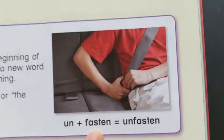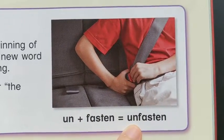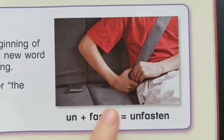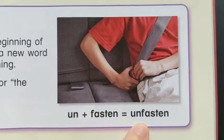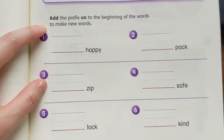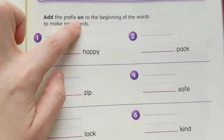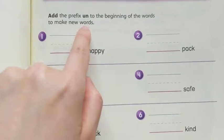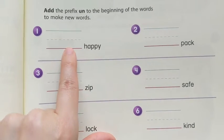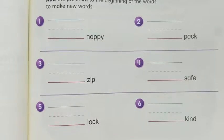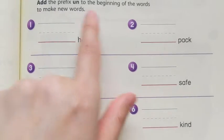So, 'fasten your seatbelt' — the opposite of fasten would be 'unfasten your seatbelt,' which means take it off. Fasten means put your safety belt on; unfasten is the opposite, take your safety belt off. So take your pencil now and add the prefix 'un' to the beginning of the words to make new words. For example, 'happy' becomes 'unhappy.' I'll leave you to read the rest out loud and fill in the blanks.